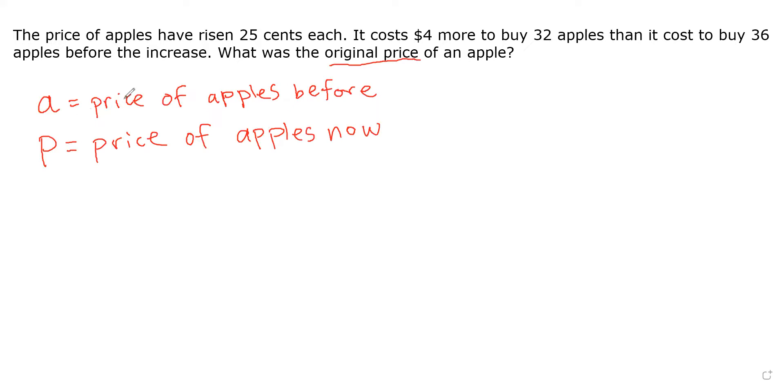A is the price of one apple before and P is the price of one apple now. So what can we do to find the relationship between A and P? It says that the price of apples have risen 25 cents each, which means the current price P is going to be 25 cents more than the old price. So it's going to be A plus 25.